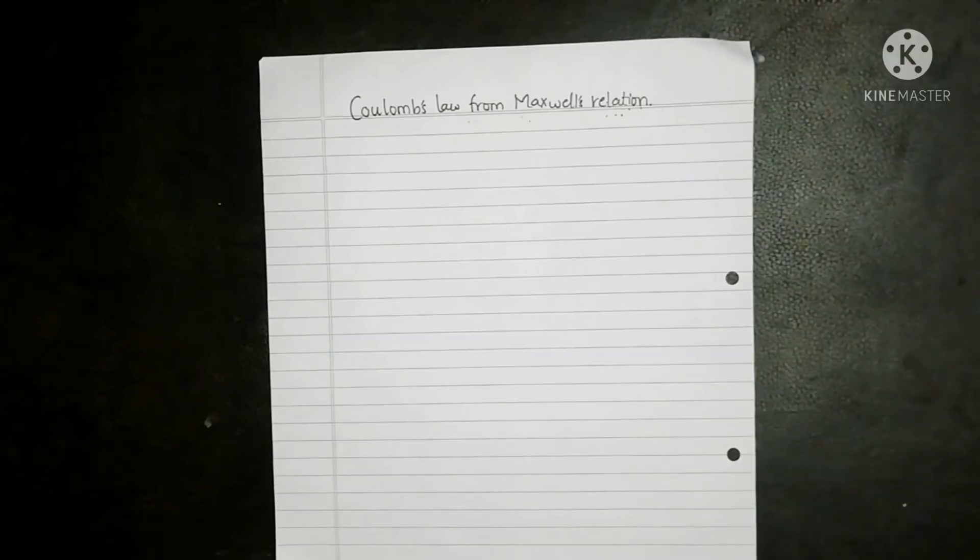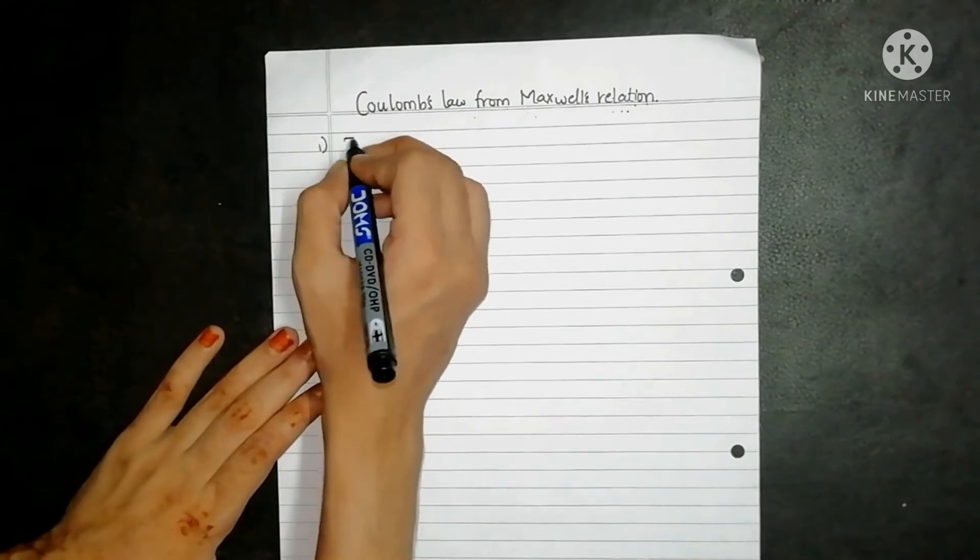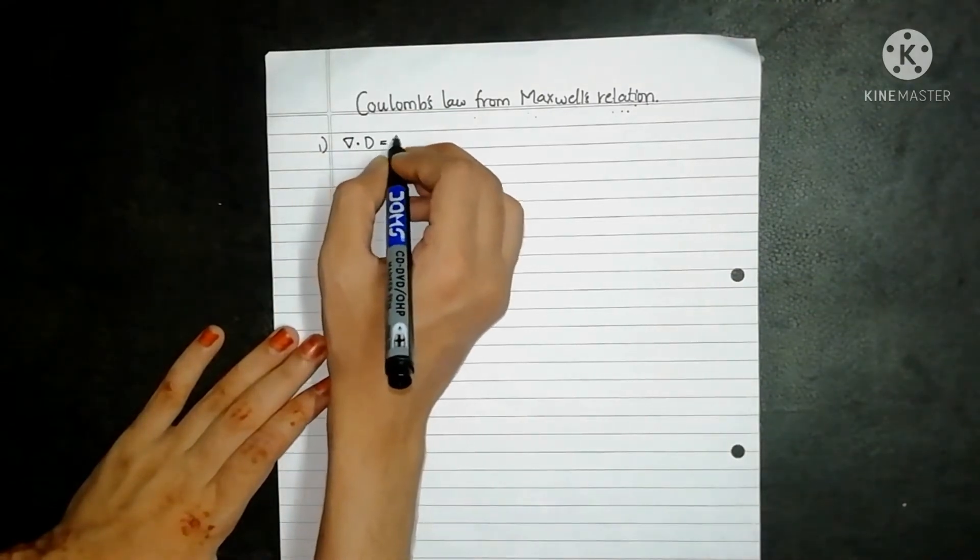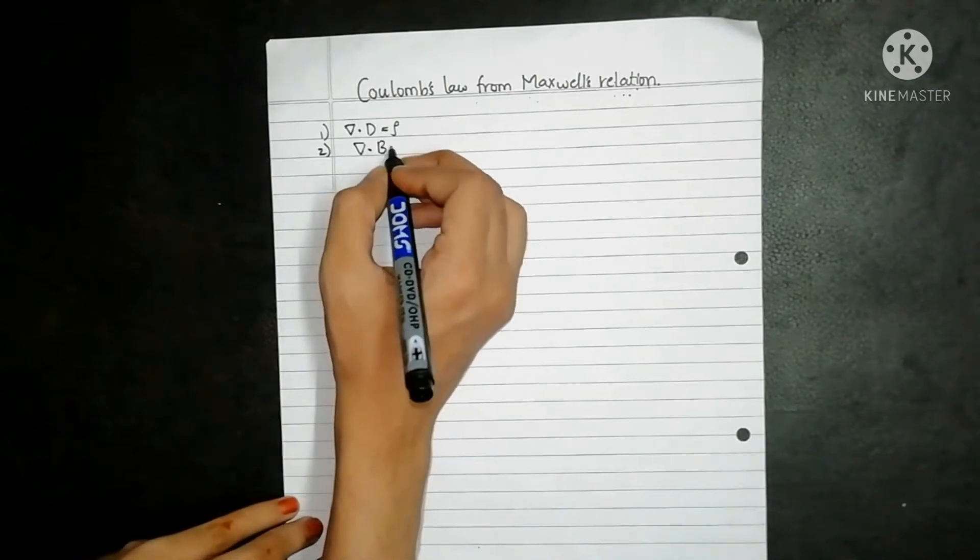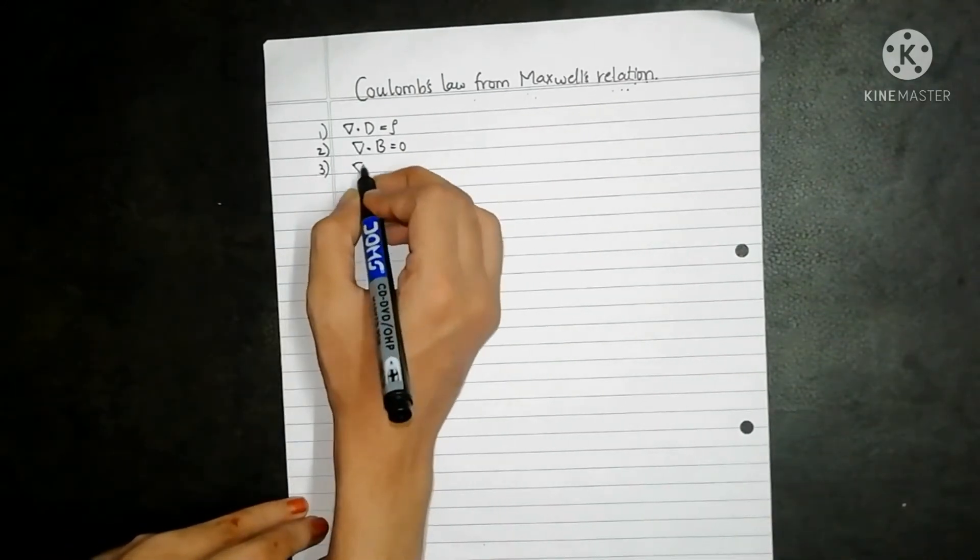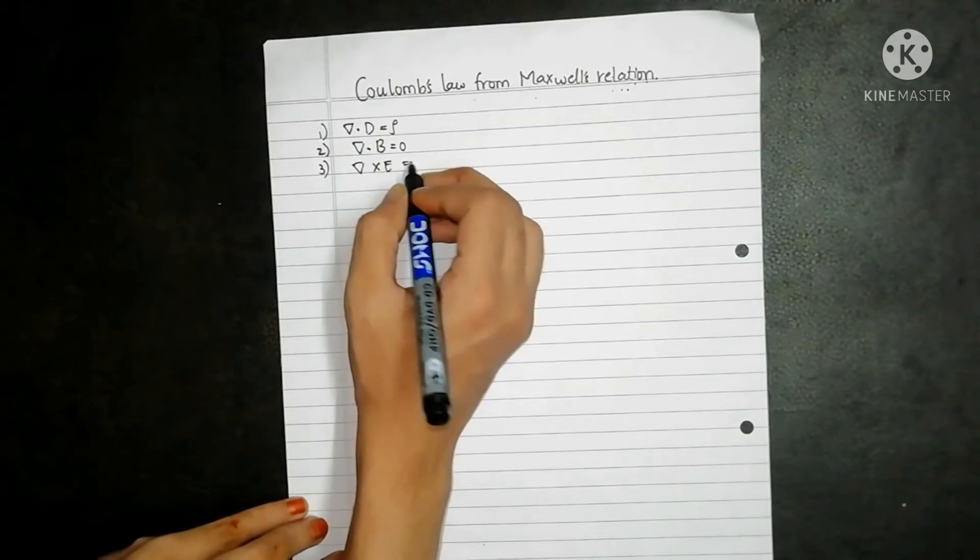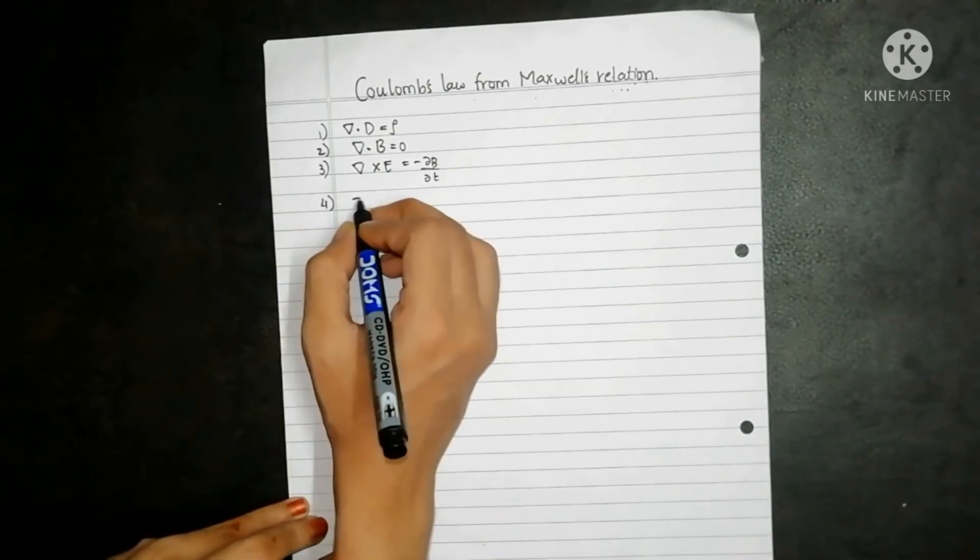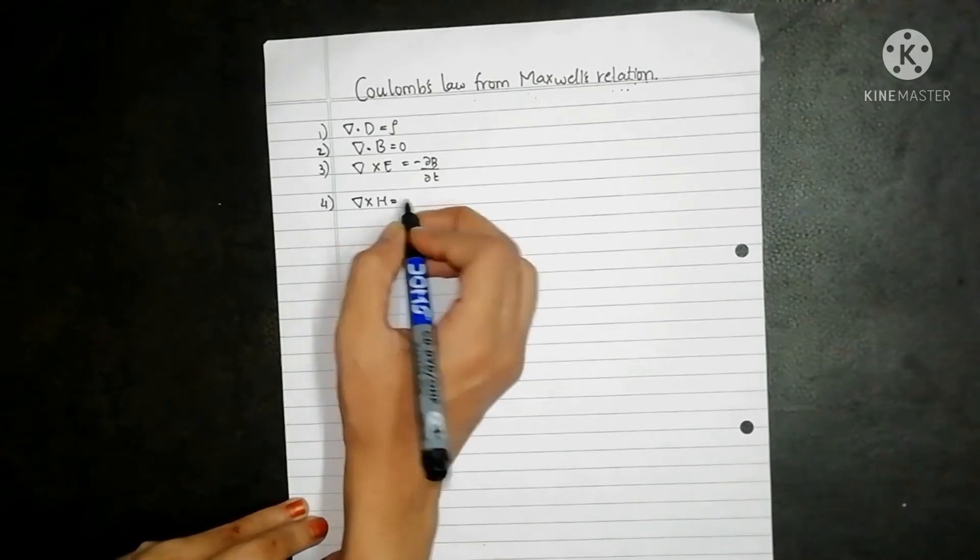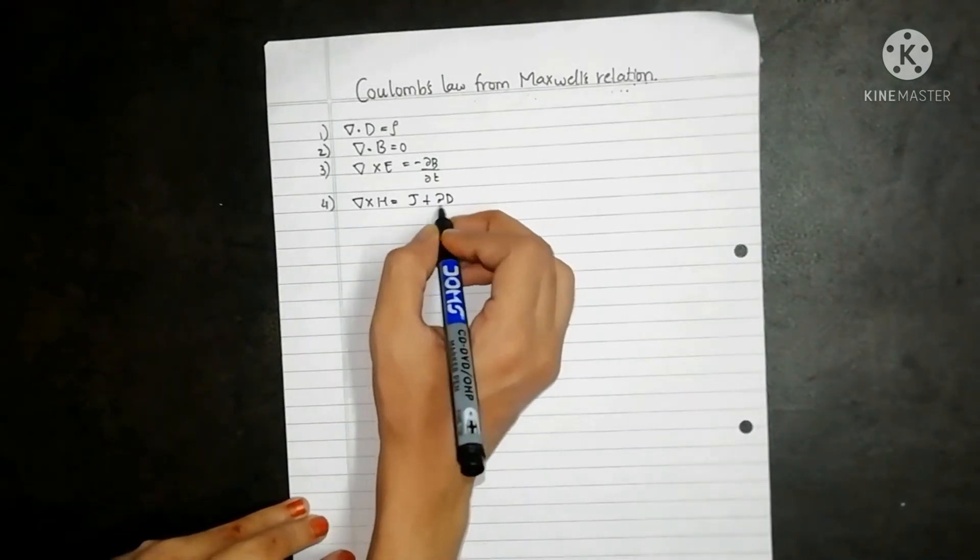So first of all we will write down all the four Maxwell's relations. Del dot D is equal to rho, the second is del dot B is equal to zero, third del cross E is equal to minus del B by del T, and the fourth relation is del cross H is equal to J plus del D by del T.